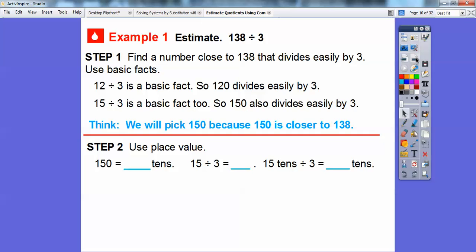Step 2, use place value. So 150, how many tens is 150? Well, here's the tens right here, it is 15 tens. So we're going to go ahead and do 15 divided by 3. Well, 15 divided by 3 is 5, so 15 tens divided by 3 is going to give us 5 tens. So 150 divided by 3 is going to be 50 because that is 5 tens, so there's my tens right there.